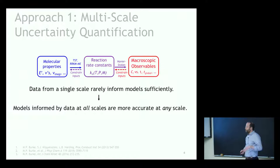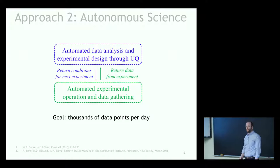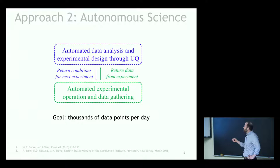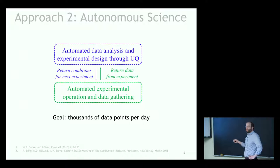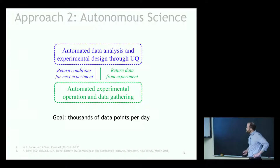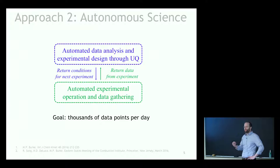Our other approach is to simply try to gather enormous amounts of data. We're working on putting together automated experiments in our lab that could operate in conjunction with uncertainty quantification approaches — doing experimental design to figure out the best experiment to run, gathering that data autonomously, and then passing it back. Our current estimates suggest we could probably get thousands of data points per day just by varying different conditions, and hopefully start to unravel some of those complex networks that could depend on tens of thousands of parameters.